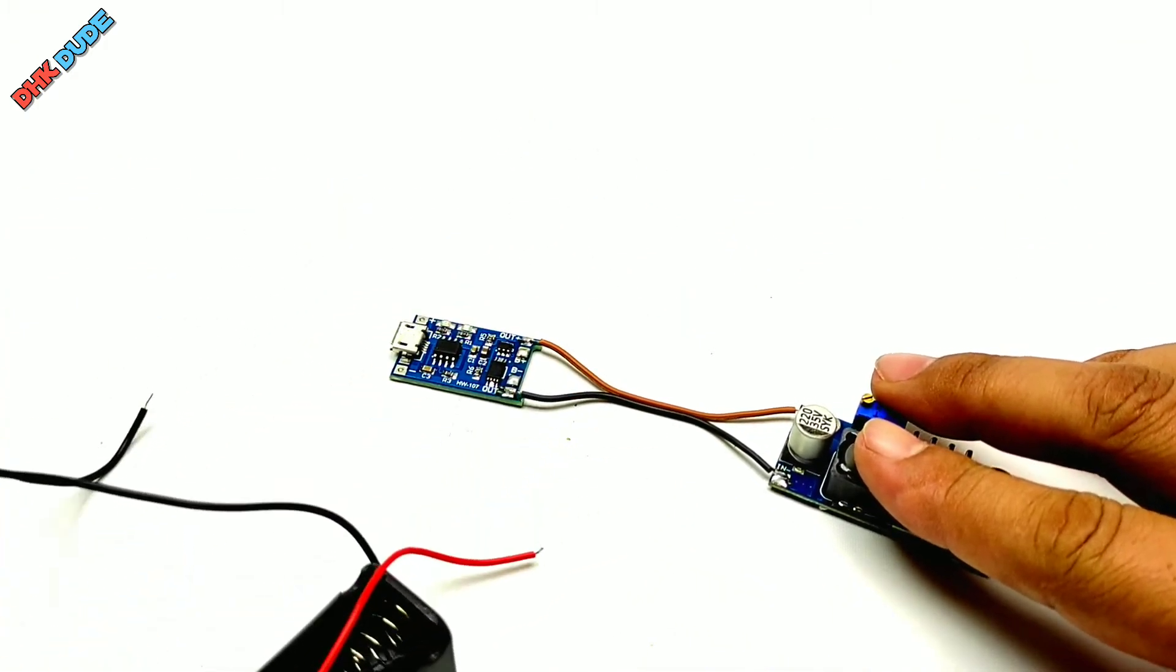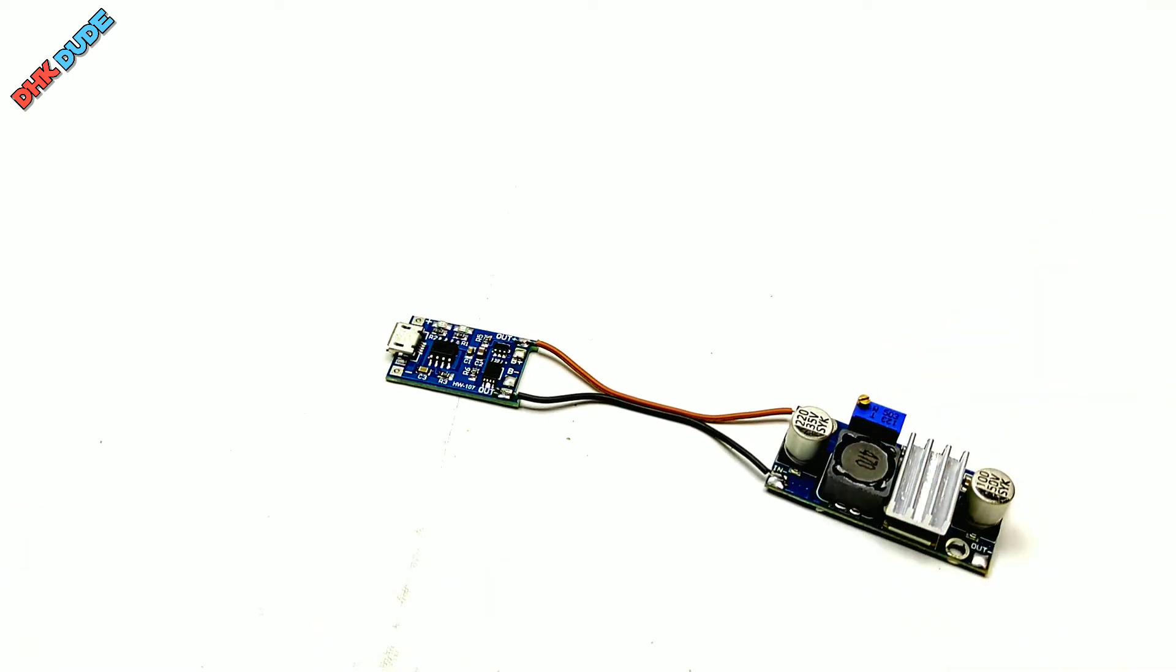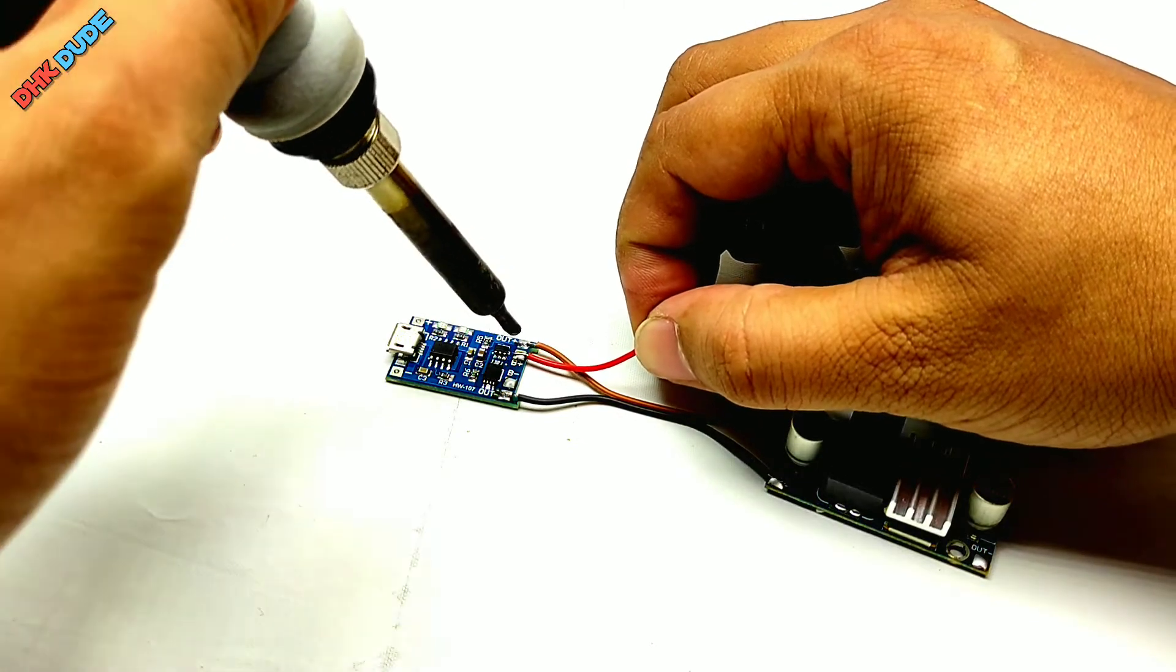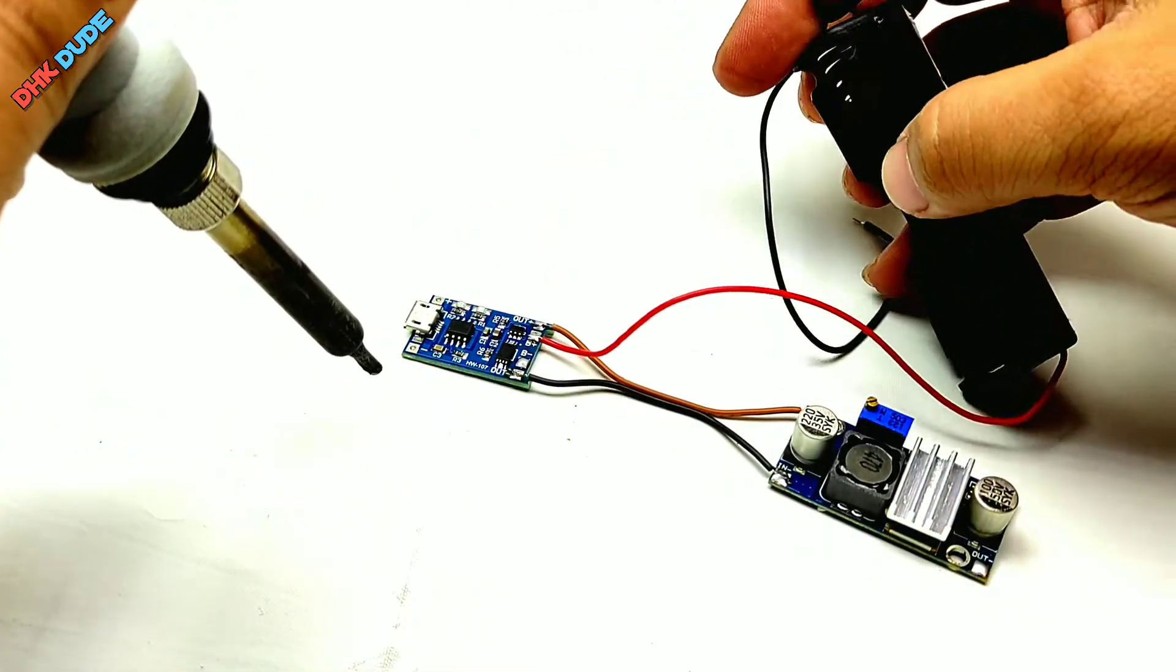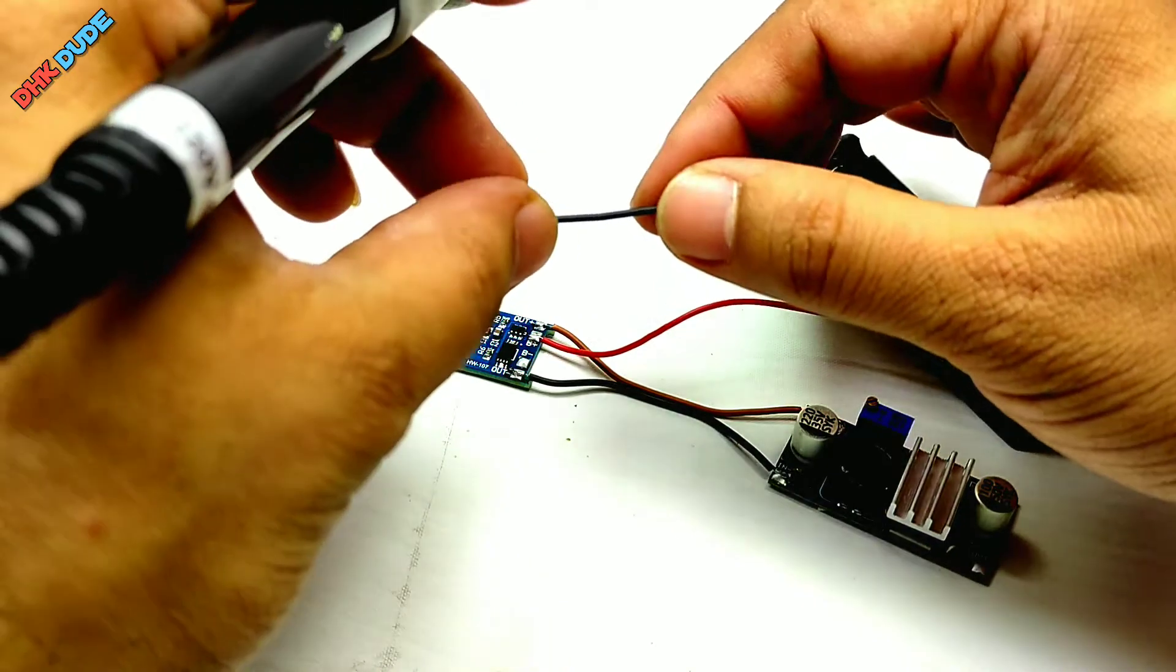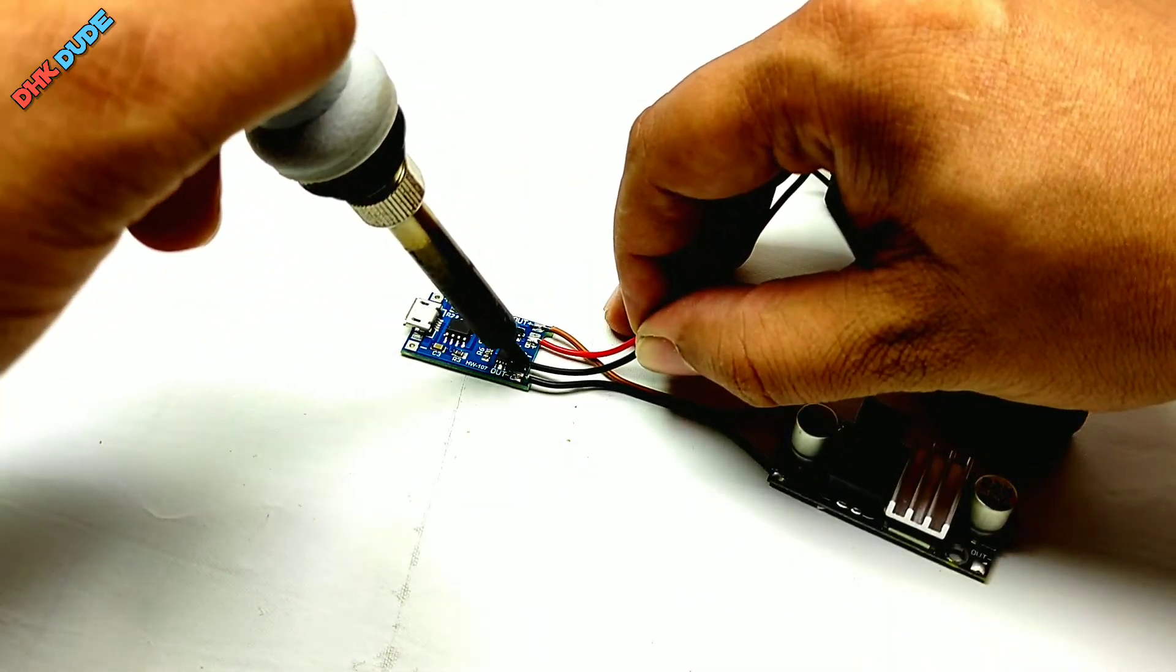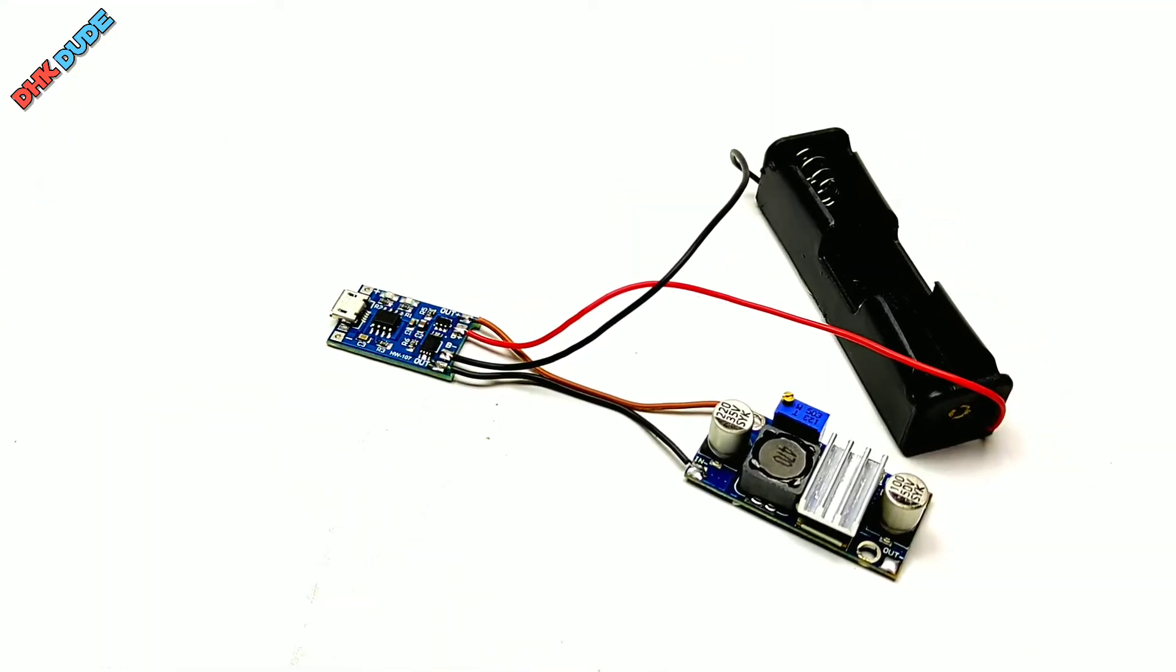Now take battery holder and solder red wire of the holder on the B+ pad of the TP4056 module. Same way solder black wire on the B- pad of the TP4056 module. So battery will supply power through TP4056 module and its voltage will be boosted by XL6009 module. Thus boosted voltage will keep our router running when there is no electricity.